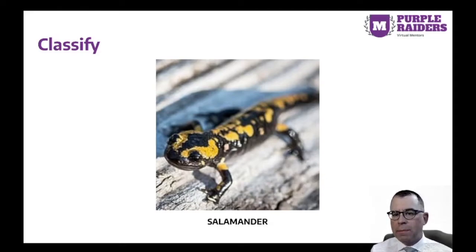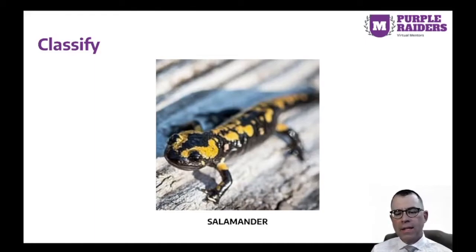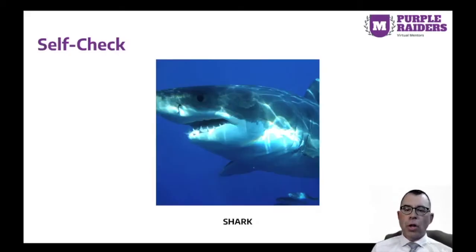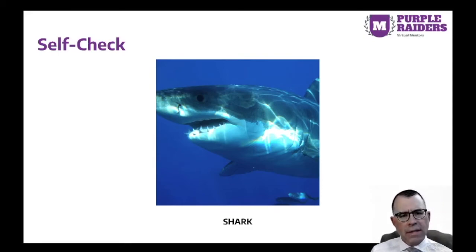Salamanders look like a cross between a frog and a lizard. Their bodies are long and slender. Their skin is moist and usually smooth, and they have long tails. How would you classify a salamander? Sharks have been around since long before the dinosaurs existed. They live in waters all over the world, in every ocean, and even in some rivers and lakes. How would you classify a shark?